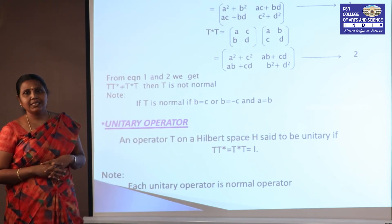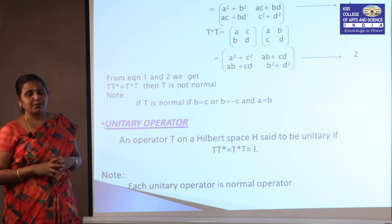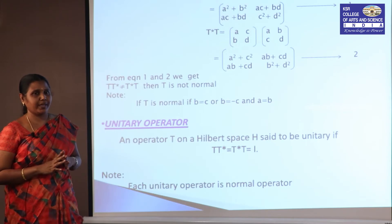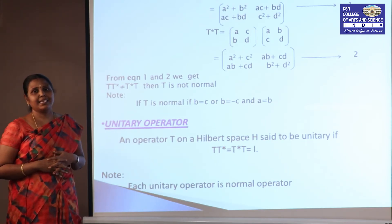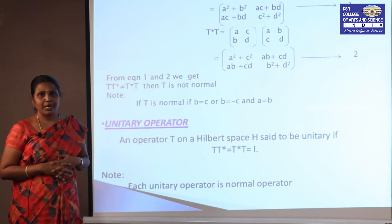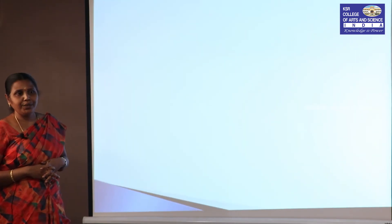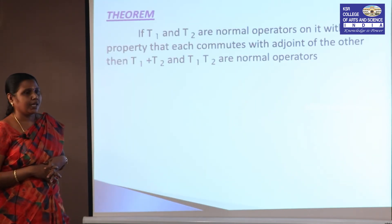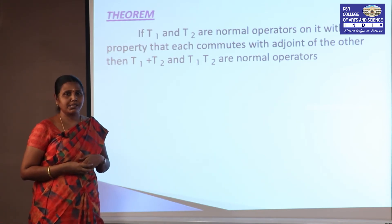Next we see the unitary operator. A unitary operator satisfies both the normal operator condition and is equivalent to the identity operator: TT* = T*T = I. Every unitary operator is also a normal operator.